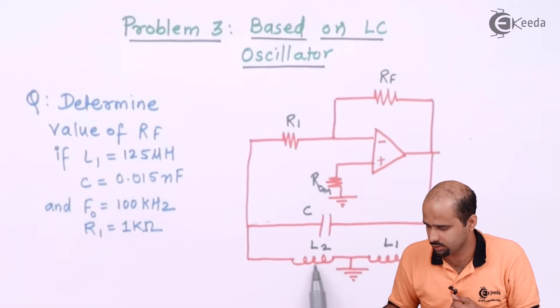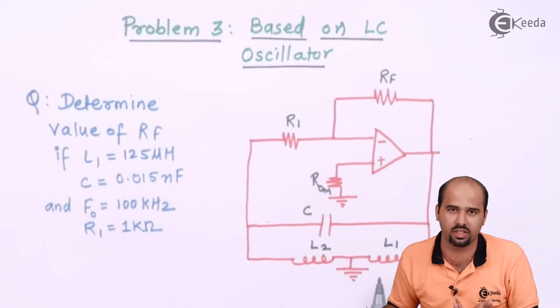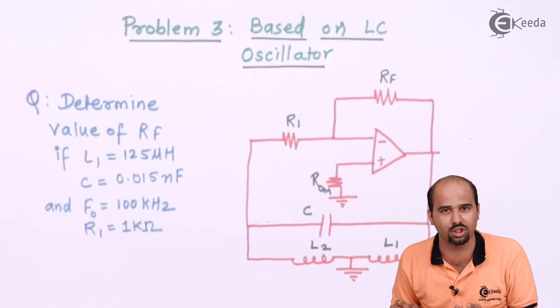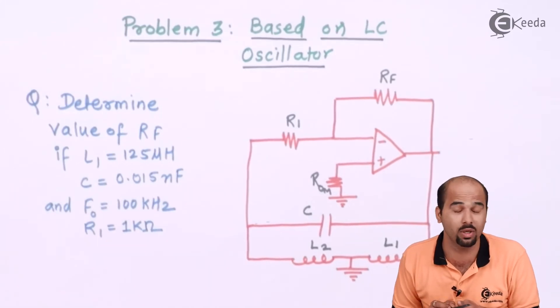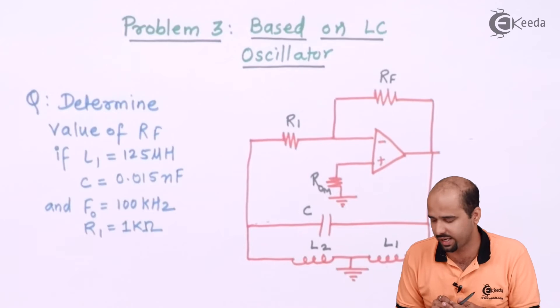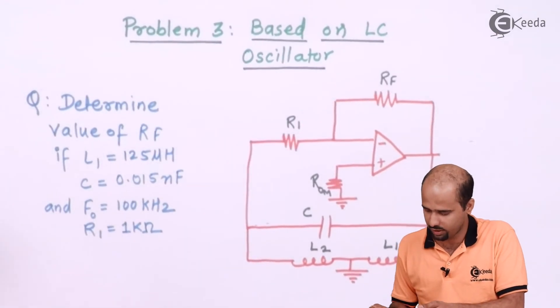but here one of the inductor is given, one of the inductor is not given. Then how to find out that particular inductor? Then we are reaching towards the formula for frequency of oscillation, right? So we will start solving this particular numerical.